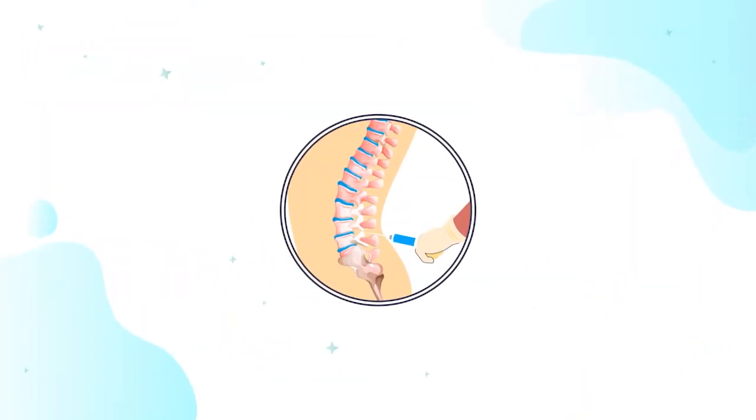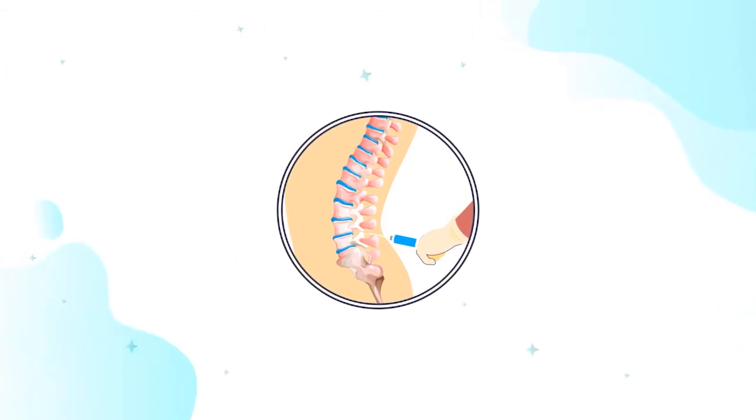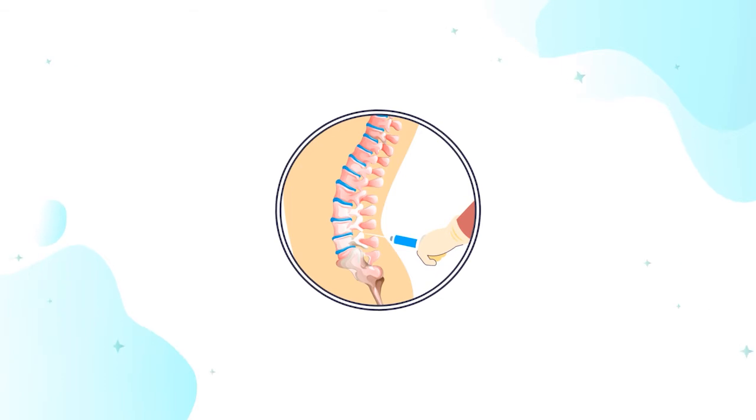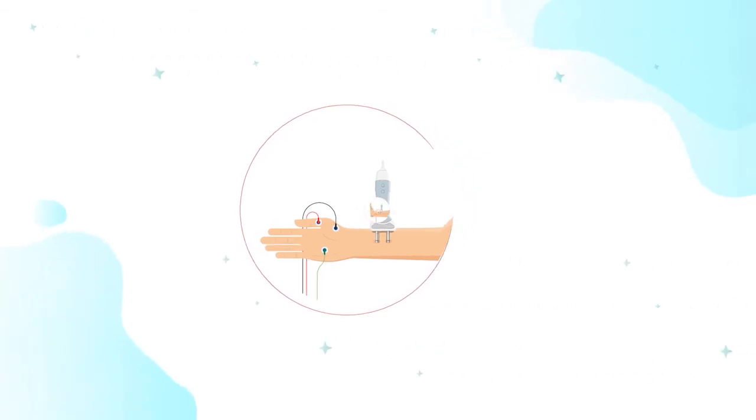A spinal tap, also called a lumbar puncture, is another diagnostic tool that your doctor might use to figure out if you have MS. You may also have tests to measure how fast your nervous system conducts signals from the arms, legs, or eyes to the brain.